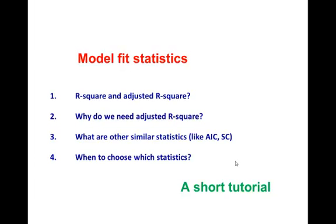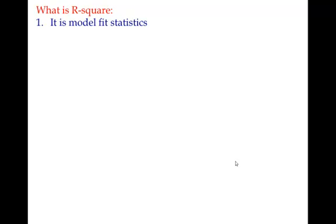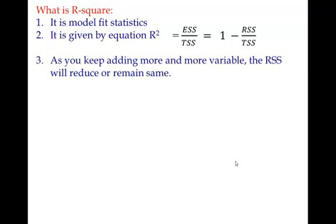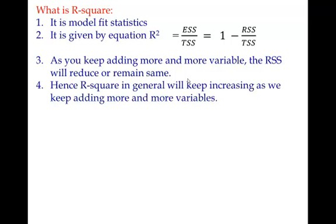So let's first discuss what is R-square. R-square is a model fit statistic and it is given by explained sum of squares by total sum of squares, or 1 minus residual sum of squares by total sum of squares. As you keep adding more and more variables, RSS will either reduce or at max remain the same. So by definition, when this is going to reduce, the R-square is going to be bigger and bigger or remain fixed, but never going to reduce when you are going to add more and more variables.